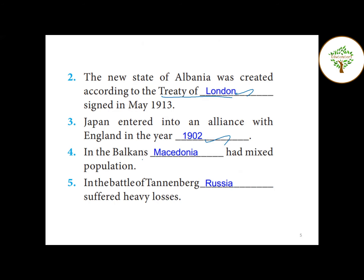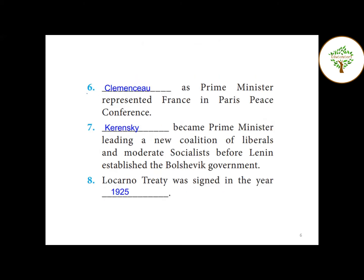Fourth question — in the Balkans, Macedonia had a mixed population. Question number five — in the Battle of Tannenberg, Russia suffered heavy losses. Question number six — who as Prime Minister represented France in the Paris Peace Conference? The answer is Clemenceau.